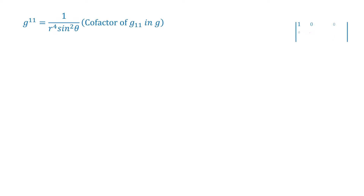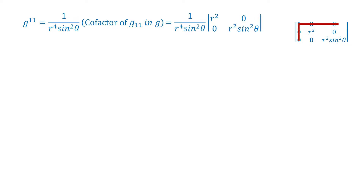Therefore, g^11 equals 1 by r to the power 4 sin square theta, into the co-factor of g11 in g, which is equal to 1 by r to the power 4 sin square theta, into the determinant of the 2×2 matrix: r square, 0; 0, r square sin square theta — which equals r to the power 4 sin square theta divided by r to the power 4 sin square theta, equal to 1.